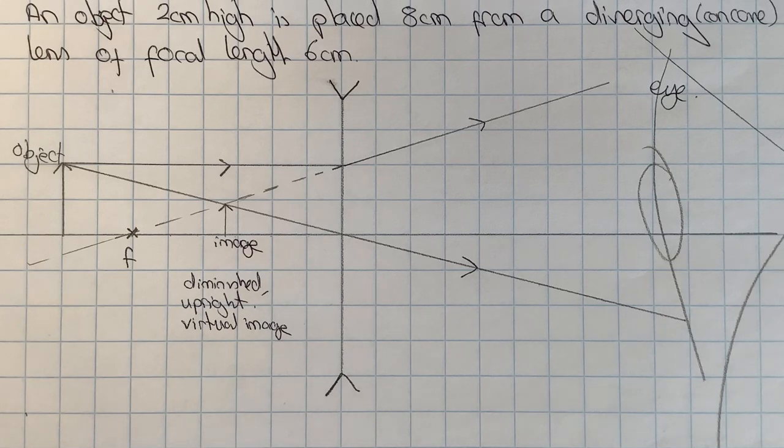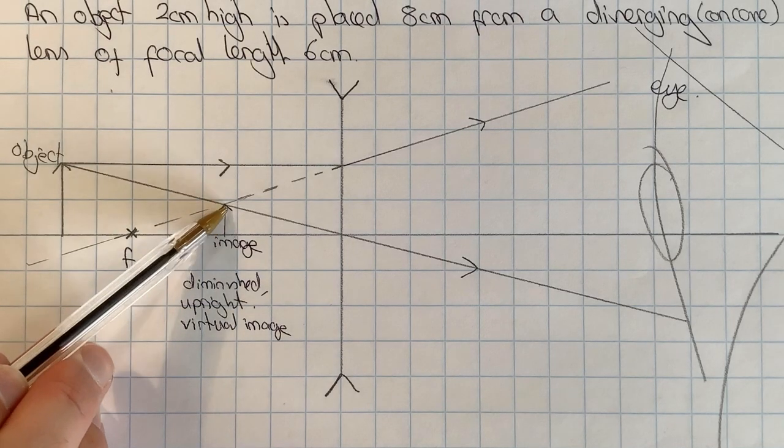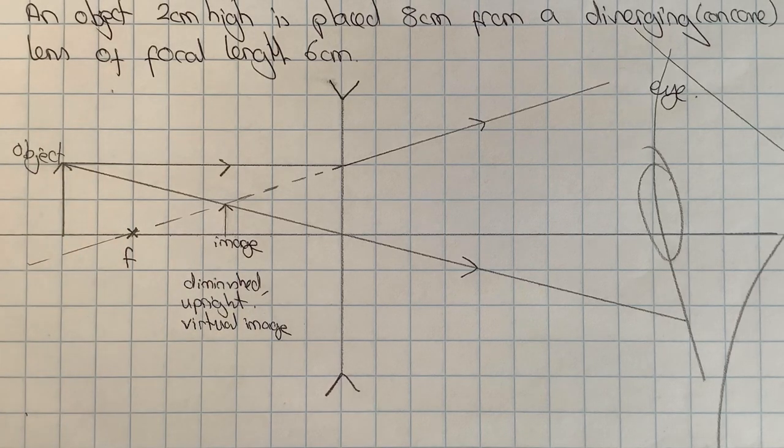So it's a little bit easier than the other kind of lens that you saw where you could get different kinds of images formed. Once again, if I wanted to find the magnification I could do that by measuring the image height and dividing it by the object type. I hope you have found this video useful.